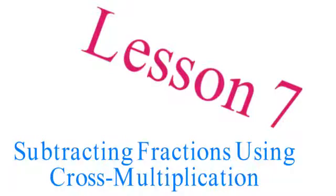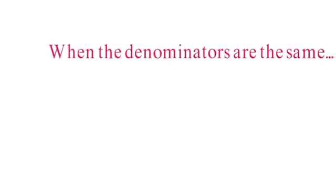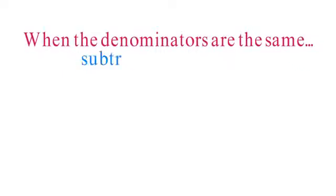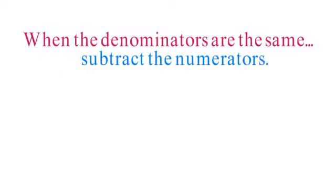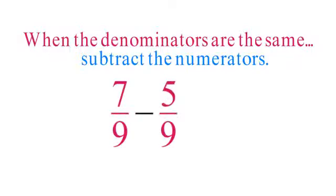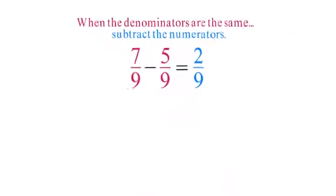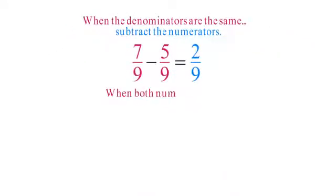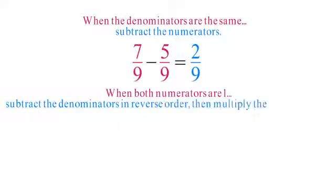So far in this course, you've subtracted fractions using three different methods that work under certain conditions. When the denominators are the same, you can subtract numerators. For example, 7 ninths minus 5 ninths equals 2 ninths. When both numerators are 1, you can subtract denominators in reverse order and then multiply them.